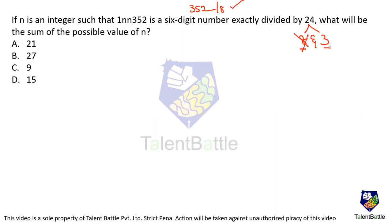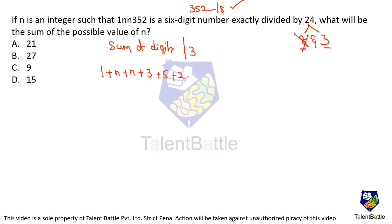Now let's check the condition of 3. What's the condition of 3? The sum of digits of the number should be divisible by 3. So let's add the digits: 1 plus n plus n plus 3 plus 5 plus 2. This should be divisible by 3.